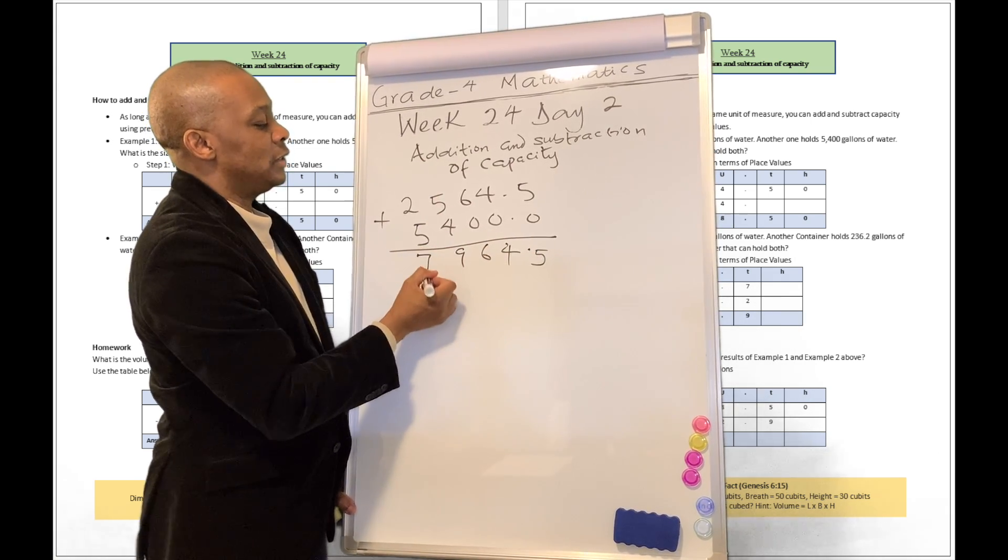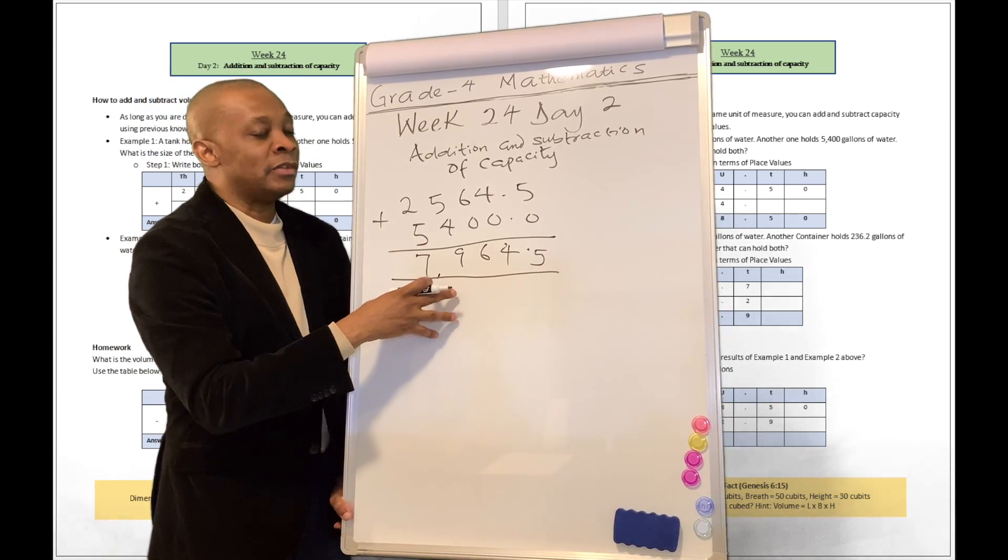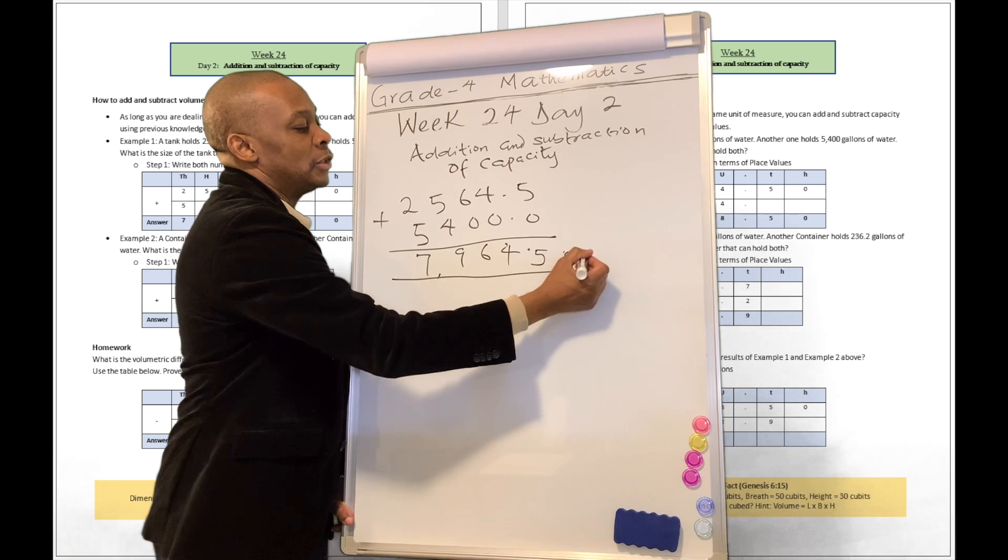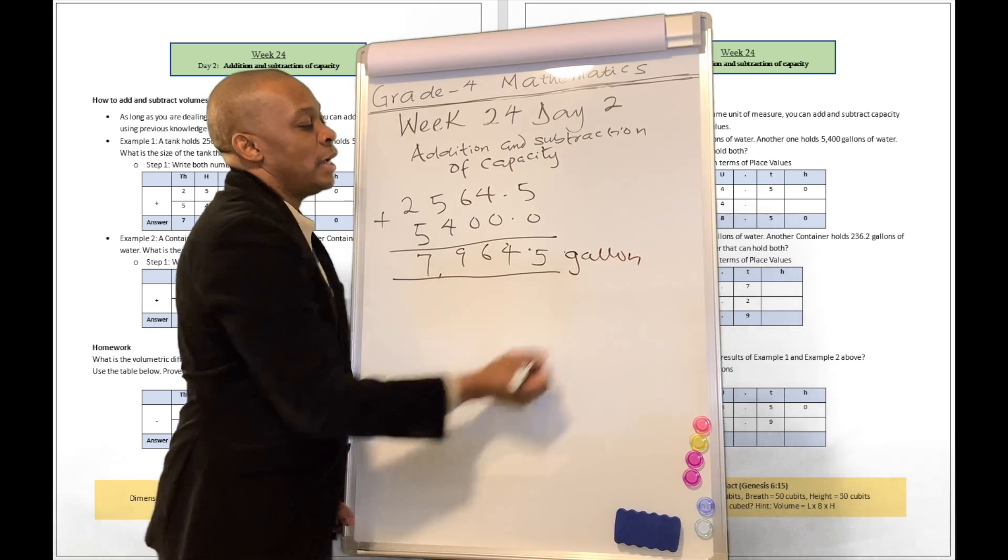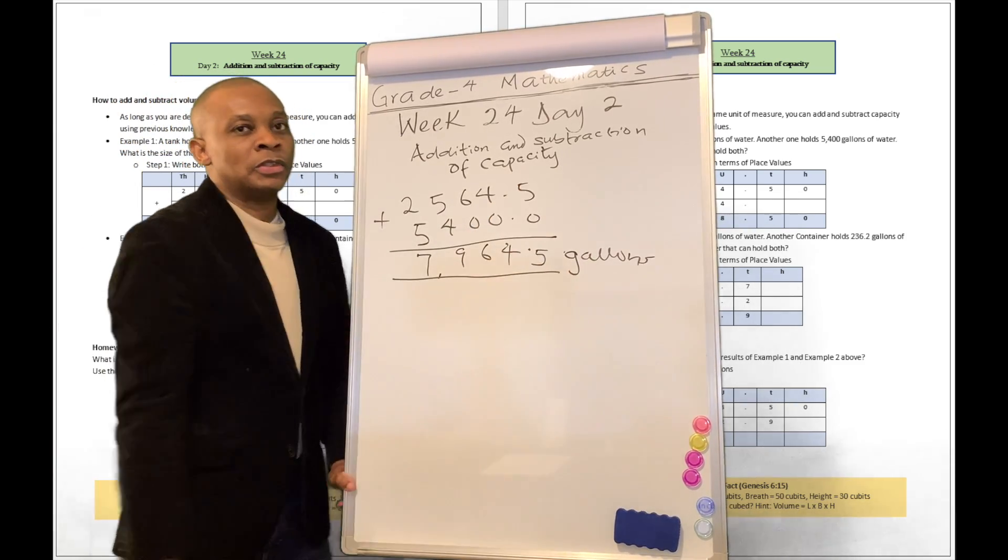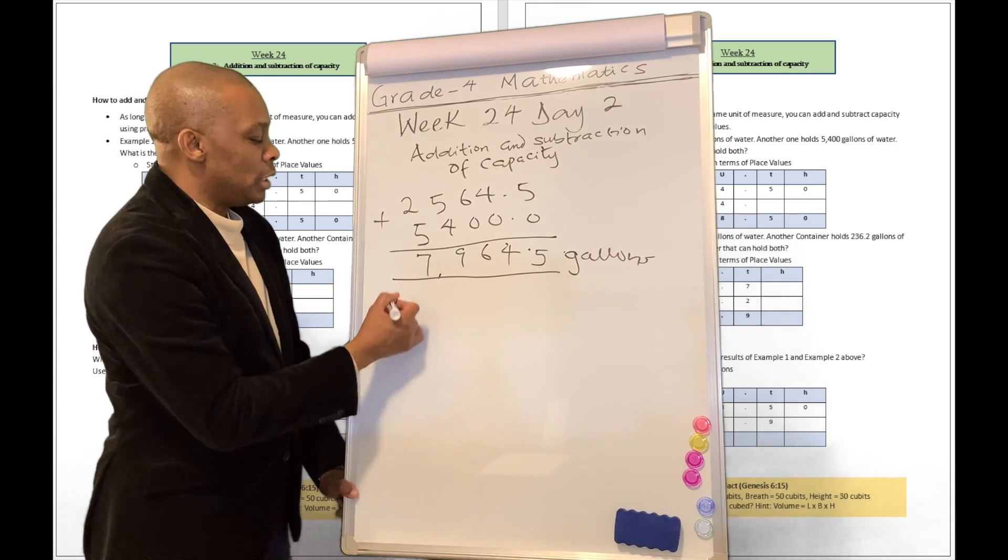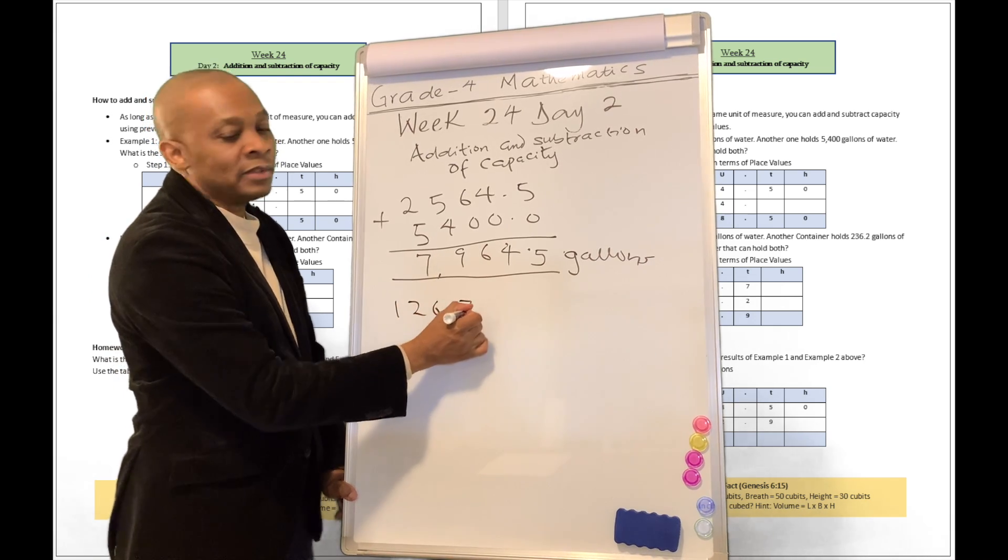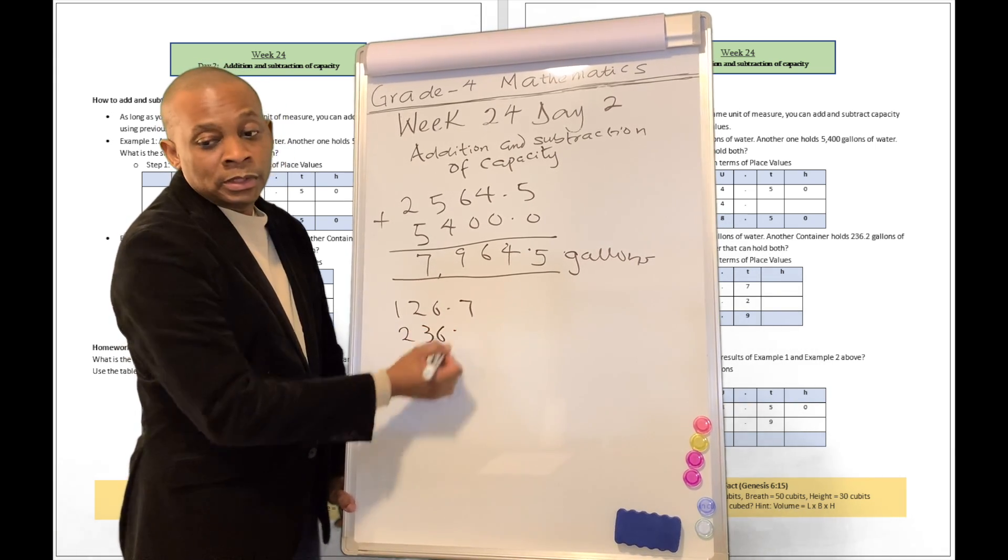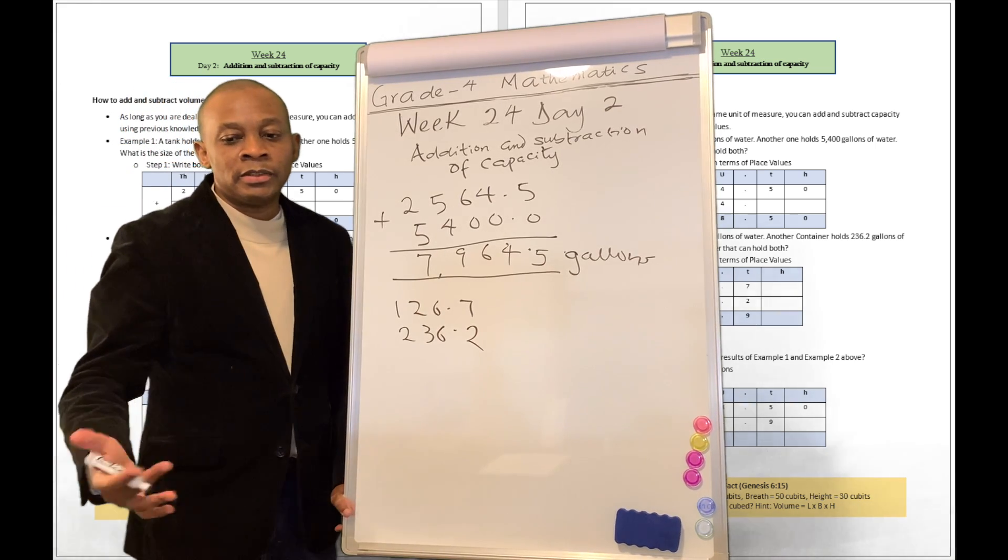5 plus 4 is 9, and this is 7. Guess what? We need to have a tank that's going to be able to hold 7,964.5 gallons of water before we can pour the contents of this tank and the contents of this tank into this third tank. Let's look at another example.